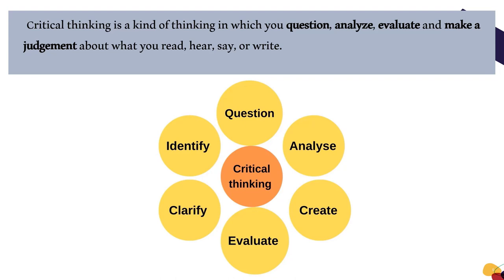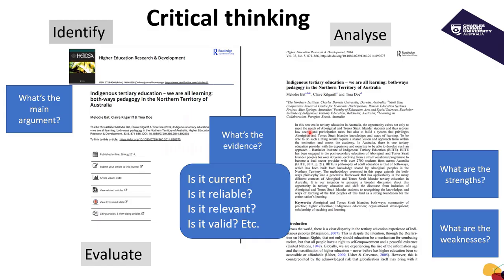Now I'm going to talk about identifying, analyzing and evaluating a little bit more through an example of a journal article. For example, we read this particular paper for our assignment. The first thing we have to do is identify what the main argument is, or what the author is trying to say. We also have to look at the evidence and decide whether it is current, reliable, relevant or valid. And don't forget to evaluate — that is identifying the strengths and weaknesses of the paper.